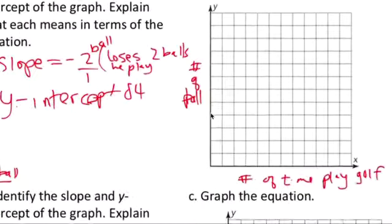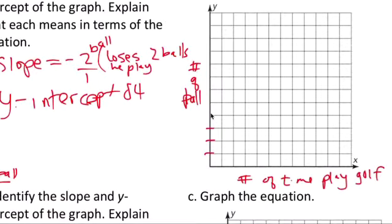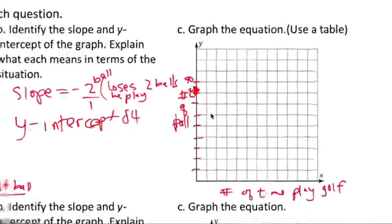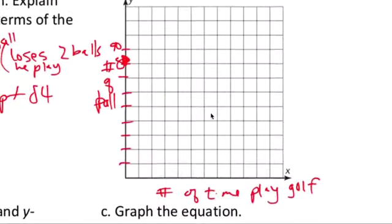So let's graph that. 10, 20, 30, 40, 50, 60, 70, 80. So this is 80, 90 here. So 84 is somewhere right there. And then he loses two balls. Let's say one game. Let's say 10 games.